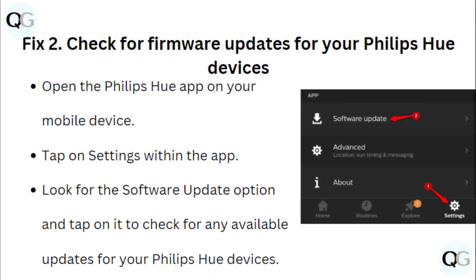2. Check for firmware updates for your Hue devices. Open the Philips Hue app on your mobile device, tap on the settings within the app, look for the software update option, and tap on it to check for any available updates for your Philips Hue devices.